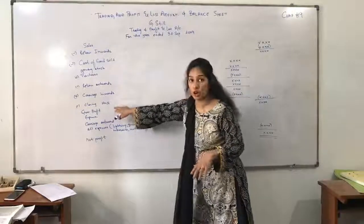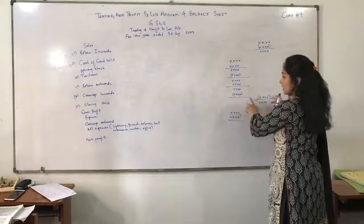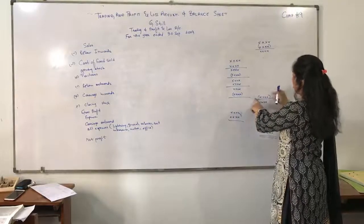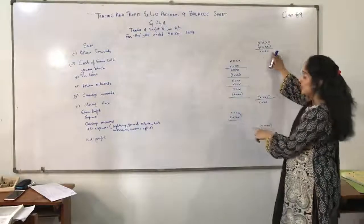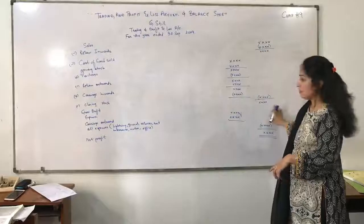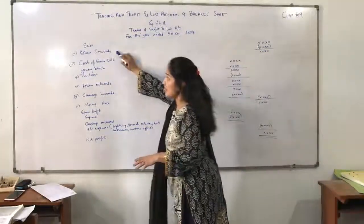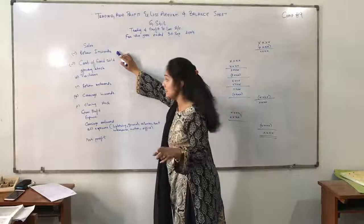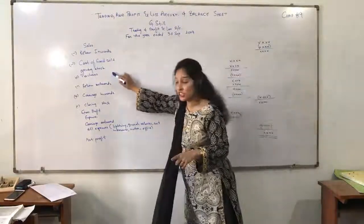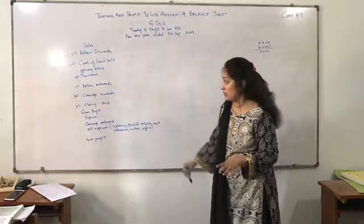Then we will subtract Closing Stock from this amount to get the total Cost of Goods Sold, which will be subtracted from the sales side to give us the Gross Profit. So to summarize: Return Inwards is subtracted from the sales item, Return Outwards is subtracted from purchases, and Carriage Inwards is added in the purchases column.